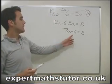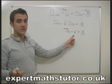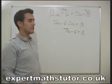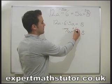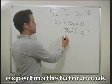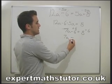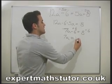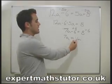What I need to do now is get rid of the 6 from this side. It's minus 6, so to get to 0 I add 6. I'm going to add 6 to both sides of the equation. 7a, plus 6 minus 6 gives 0 on that side, and equals 8 plus 6, which is 14. So 7a equals 14.